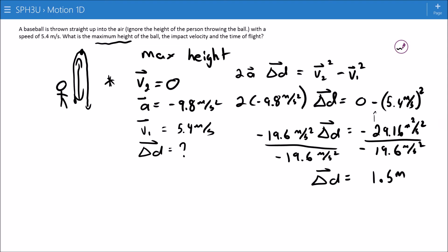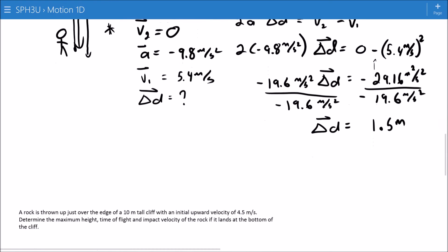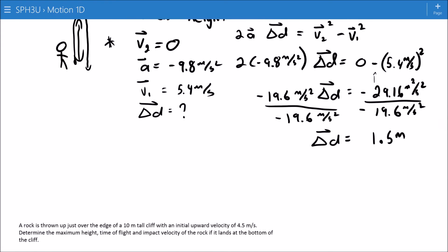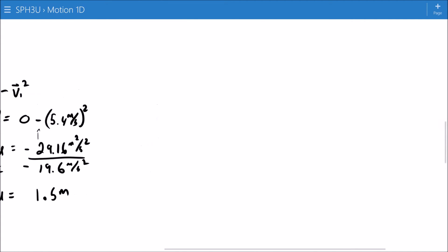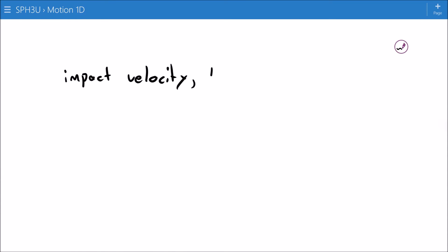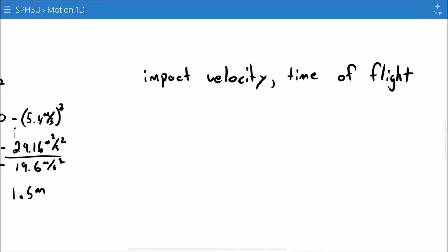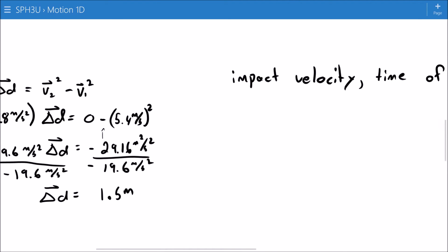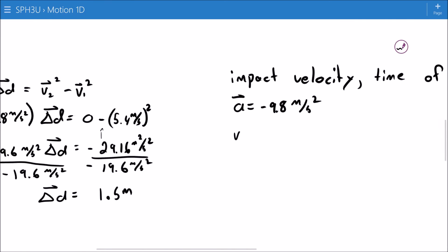Okay, impact velocity and time of flight. We have a slightly different trick for those two situations, I'm going to go this way. For impact velocity or time of flight, I'm just going to translate the information that still holds. My acceleration, this object is floating through space, so it's 9.8 meters per second squared. It's falling. And it has an initial velocity of 5.4 meters per second.